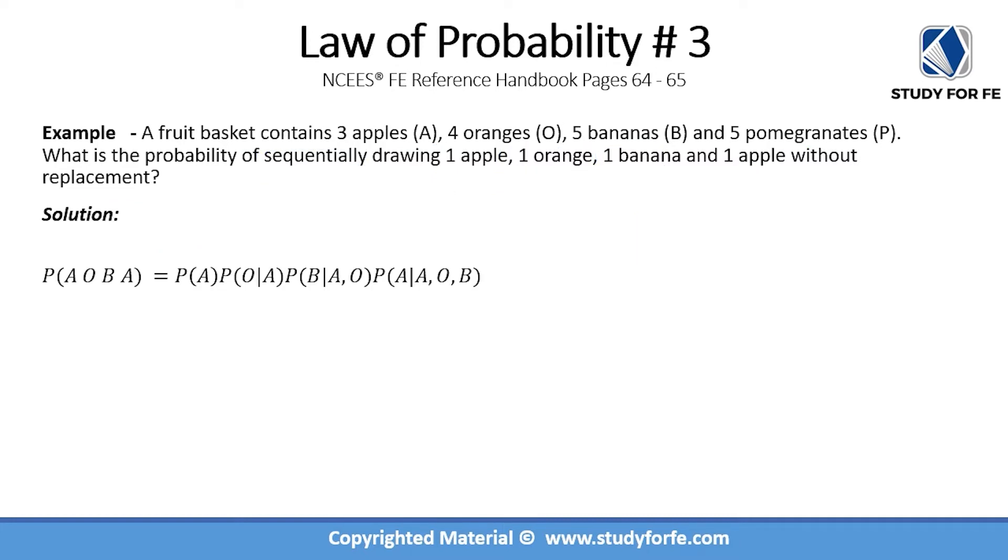What we are really after is this probability of removing an apple, then an orange, then a banana, and then an apple. This would be probability of A. In the basket, you're removing the apple first, so that is not dependent on anything else initially.